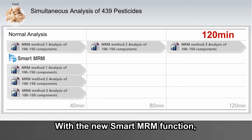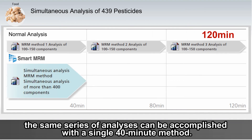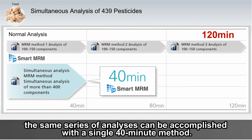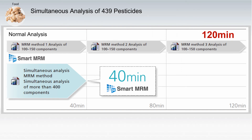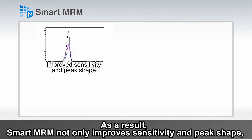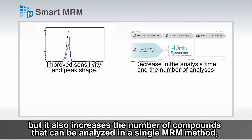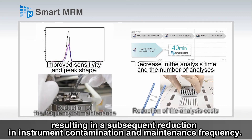With the new SMART MRM function, the same series of analyses can be accomplished with a single 40-minute method. As a result, SMART MRM not only improves sensitivity and peak shape, but it also increases the number of compounds that can be analyzed in a single MRM method, resulting in a subsequent reduction in instrument contamination and maintenance frequency.